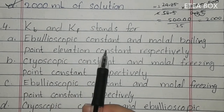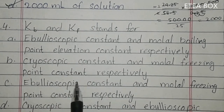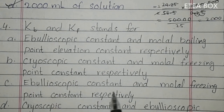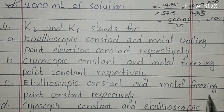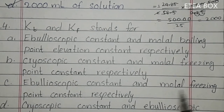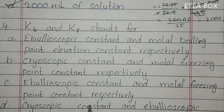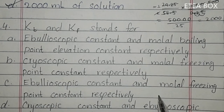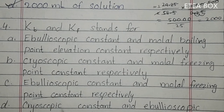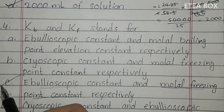MCQ 23: Kb and Kf stand for — option C is correct. Kb stands for ebullioscopic constant (molar boiling point constant). Kf stands for molar freezing point constant, also called cryoscopic constant. So Kb is the ebullioscopic constant and Kf is the cryoscopic constant. Option C is correct.